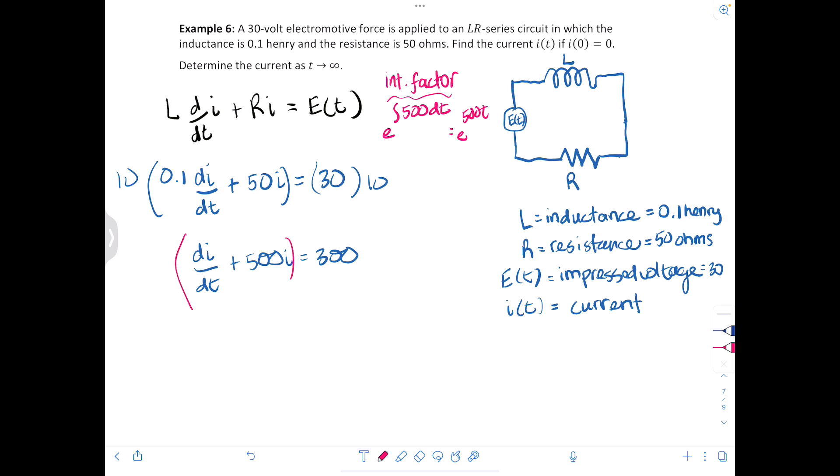So multiplying both sides by e to the 500t. We'll have it set up where we can integrate. So we'll have d/dt of e to the 500t times I is equal to 300 e to the 500t dt. And now also remember that we'd be doing a u substitution for the 500t in the exponent.